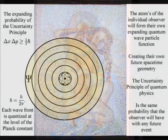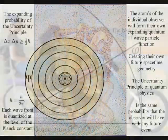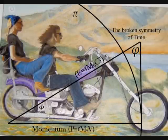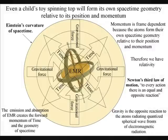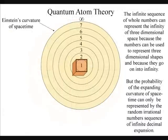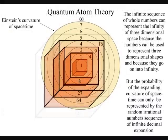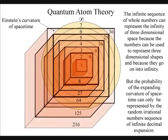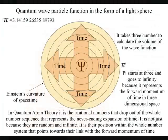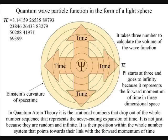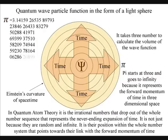Therefore the infinity of time is an innate property of matter, whatever form or shape it takes, and this is why momentum itself is frame dependent, and we have relativity. Even a child's toy spinning top will form its own space-time geometry, relative to its position and momentum, creating its own gravitational field. It is easy to see how our infinite sequence of whole numbers can represent the infinity of three-dimensional space, because the numbers can be used to represent three-dimensional shapes. But it is the irrational numbers that drop out of the whole number sequence that represent the never-ending expansion of time. In quantum atom theory, the irrational number pi is a physical constant and represents the expanding curvature of space-time. It is not just because it is random and carries on expanding forever — its position within the whole number system points towards its link with the forward momentum of time.